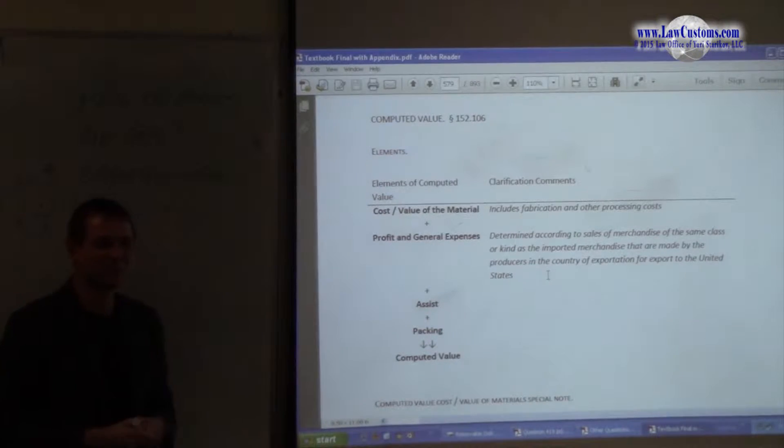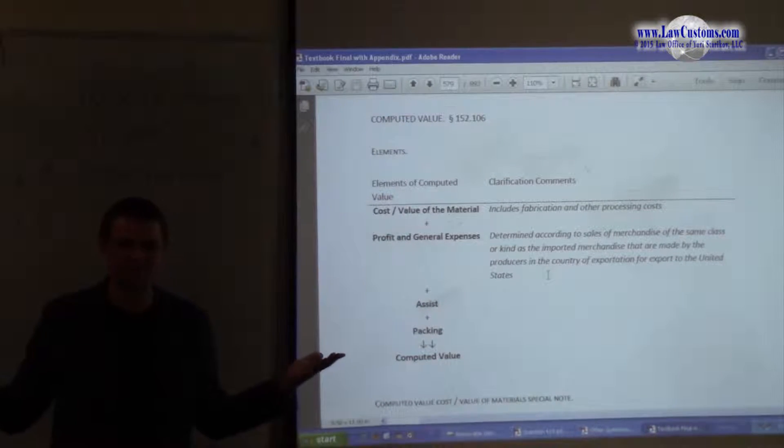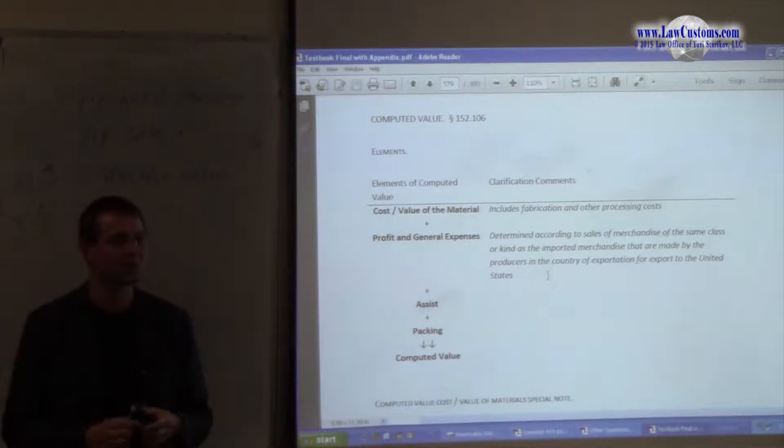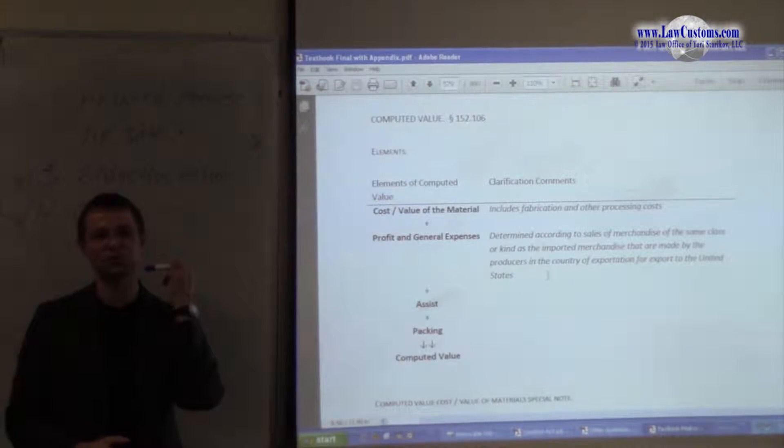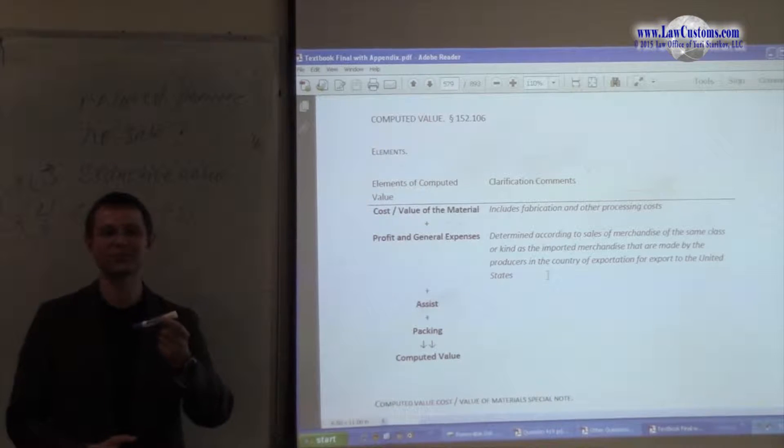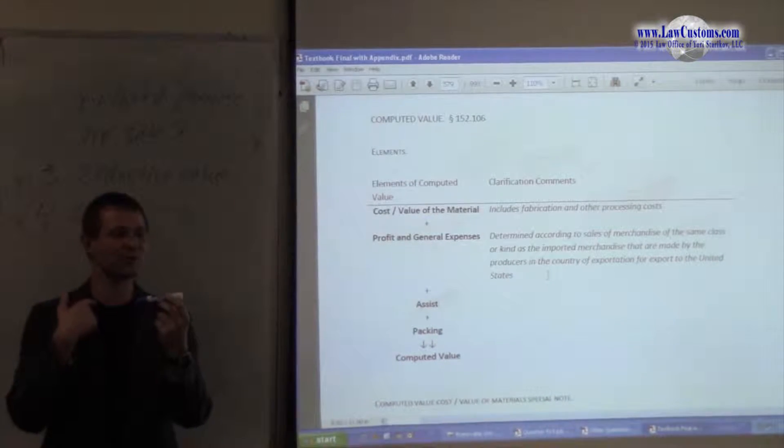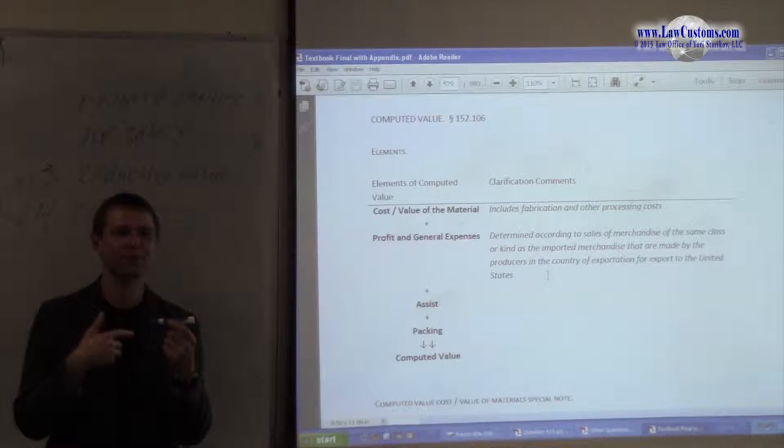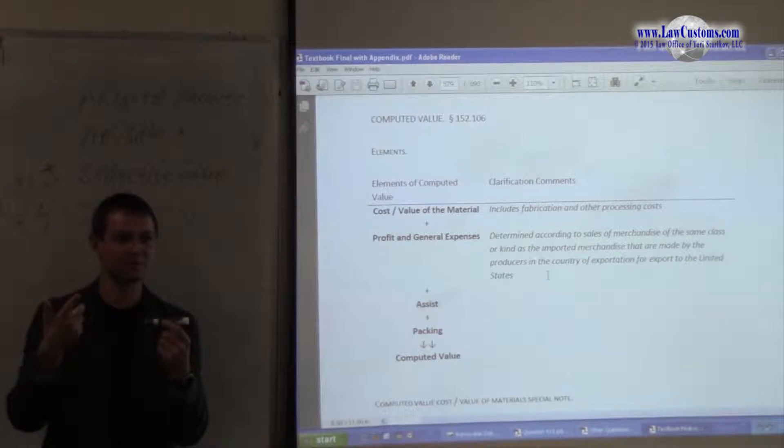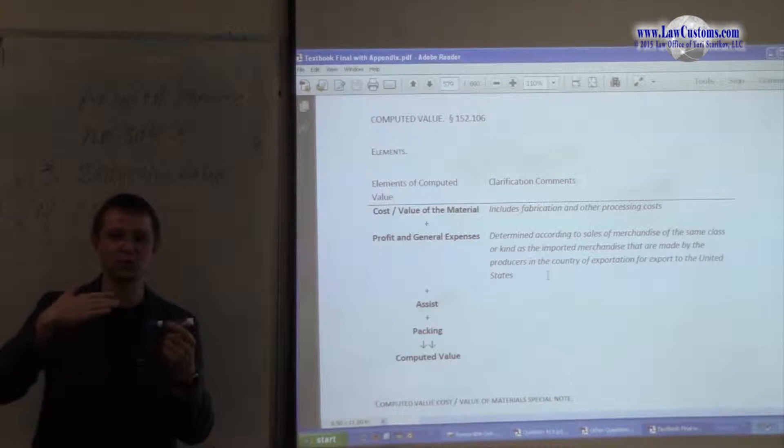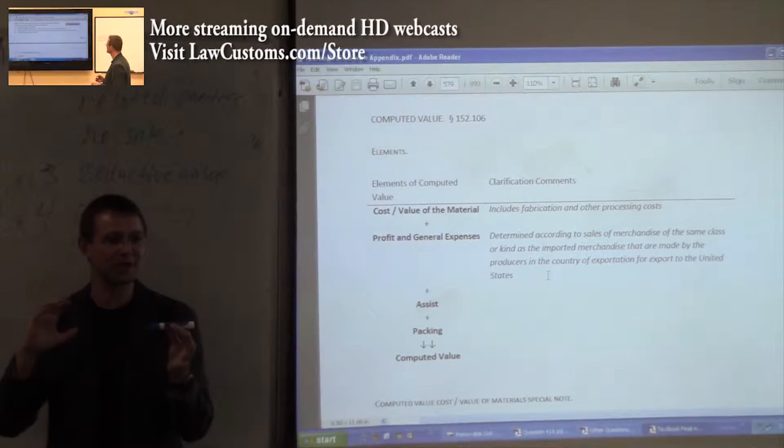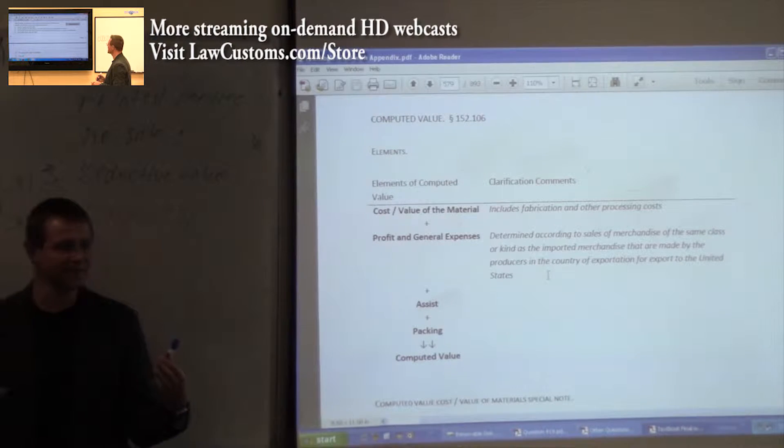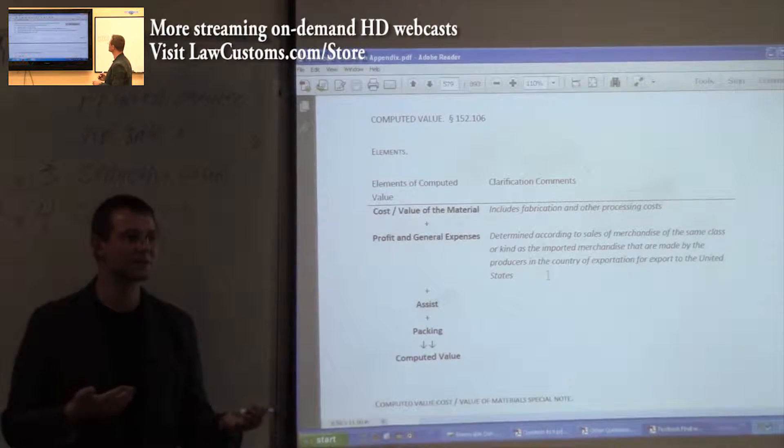Computed pretty much stands for what the word says. You compute the value from the aggregate input of what's been put into the product. You include the value of the design, you go from ground up. You include the value of the plastic. I mean, you're talking about this pen. You include the value of the profit and you include any other inputs that have been made in the process of production of the good. And then you declare that value.